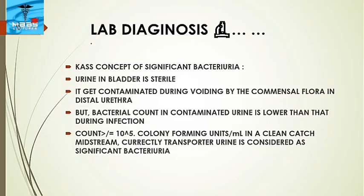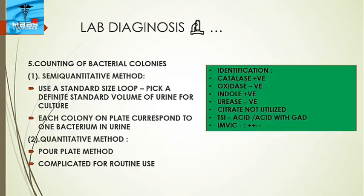Regarding significant bacteriuria: urine in the bladder is sterile but gets contaminated during voiding by normal flora of the distal urethra. Bacterial count in contaminated urine is lower than during infection. A count of ≥10⁵ colony-forming units per mL in a clean catch midstream urine is considered significant bacteriuria. For colony counting, the semi-quantitative method uses a standard size loop to inoculate a definite volume of urine; each colony corresponds to one bacterium. The quantitative pour plate method is more complicated for routine use.